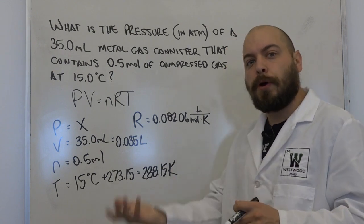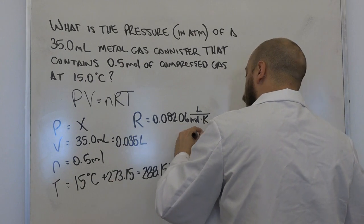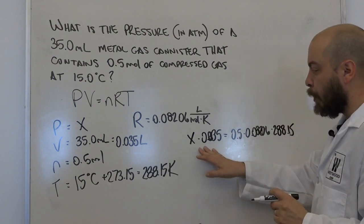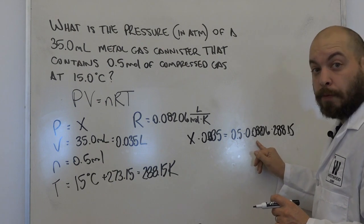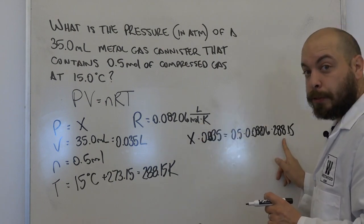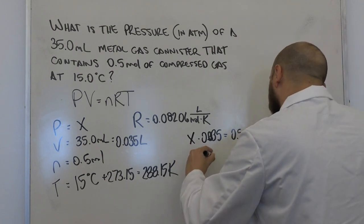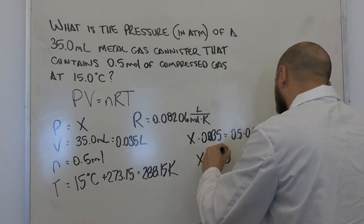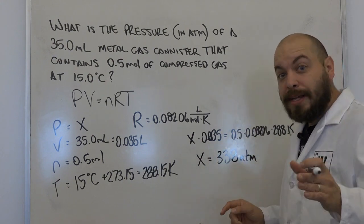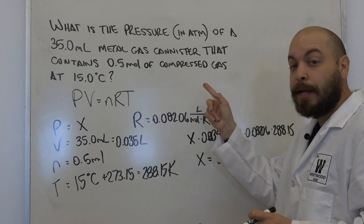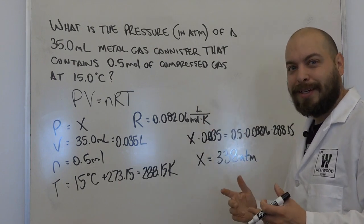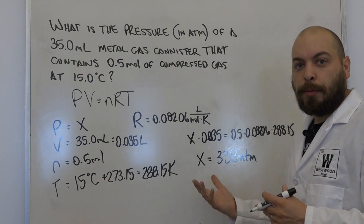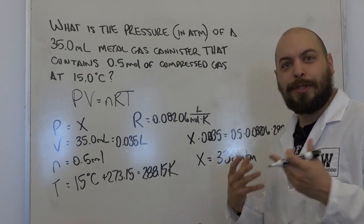We've got 0.035 liters, 0.5 moles, R = 0.08206, and our temperature in Kelvin. We solve for x and end up with a value of 338 atmospheres. That means with only half a mole of gas in this container, we have a pressure that is 338 times atmospheric pressure at sea level — incredible pressure within this small container. It doesn't take a whole lot of gas to exert a whole lot of pressure.